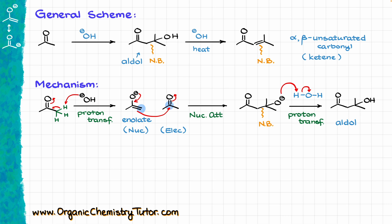If we're doing this reaction at low temperature, then similar to how this reaction works in acidic conditions, we are going to end up with the aldol as our major product. In that case, just like in acidic conditions, we call this reaction an aldol addition rather than condensation. If, however, we want to make a double bond, we need to increase the temperature a little bit.